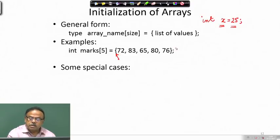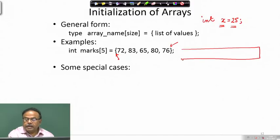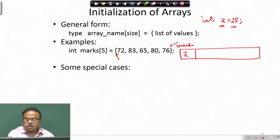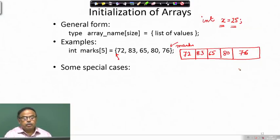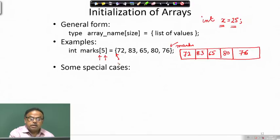The initialization values are placed within curly braces. This creates an array named max where max[0] is 72, max[1] is 83, max[2] is 65, max[3] is 80, and max[4] is 16 - giving 5 elements indexed 0 through 4. Note that square brackets are used for declaring the dimension, while curly braces are used for initialization values.